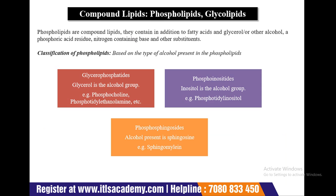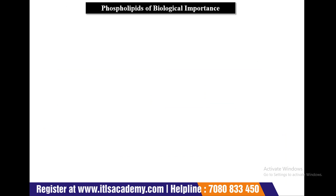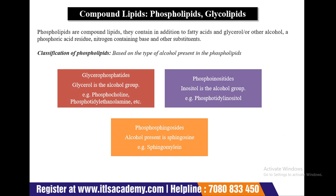Compound lipids include phospholipids and glycolipids. Phospholipids contain fatty acids and glycerol or another alcohol, plus phosphoric acid and a nitrogen-containing base. Based on the type of alcohol, phospholipids are classified into glycerophosphatides (glycerol as the alcohol group, e.g., phosphocholine and ethanolamine), phosphoinositides (inositol as the alcohol group, e.g., phosphatidylinositol), and phosphosphingolipids (sphingosine as the alcohol, e.g., sphingomyelin).